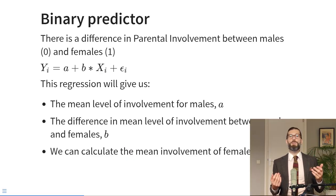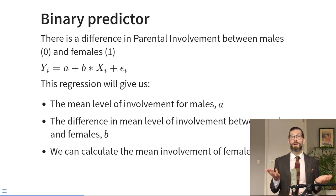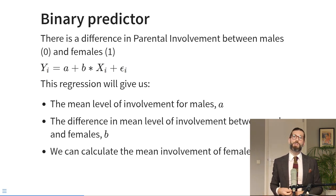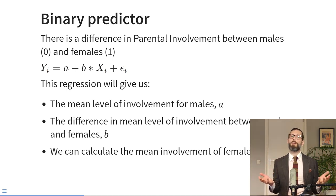Let's look at what happens when continuous and binary variables interact. Consider an example where there is a difference in parental involvement between males coded 0 and females coded 1. To represent this difference — essentially an independent samples t-test — we can use regression with a binary dummy predictor. This regression gives us the mean level of involvement for males as the intercept A, and the difference in mean level of involvement between males and females as the regression slope B.